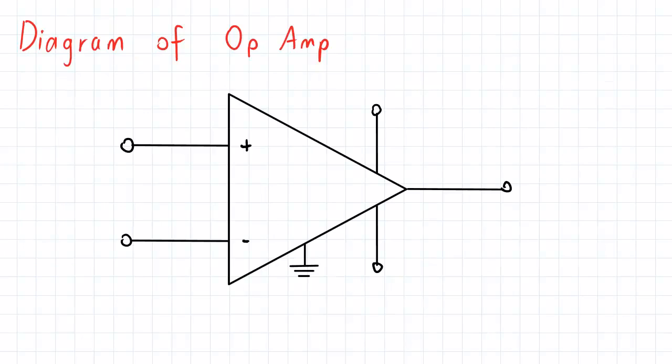And so therefore, the diagram of the op amp looks something like this. We have a positive terminal here, a negative terminal, and so what this section is called here is what we call the non-inverting input.